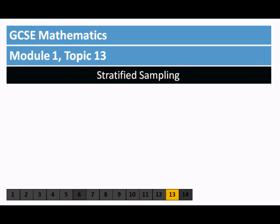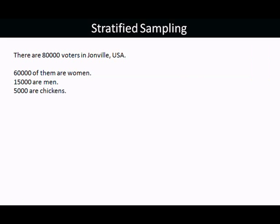Topic 13: Stratified Sampling. So there's a town with 80,000 voters — 60,000 women, 15,000 men, and 5,000 chickens.